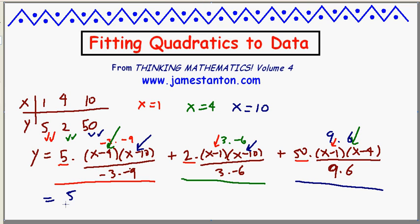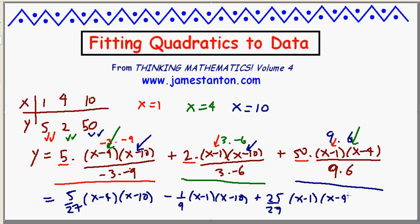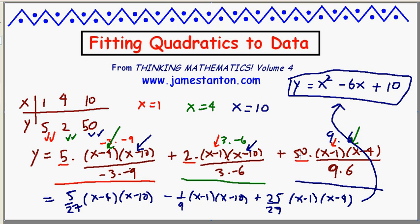At the very least, I really have 5/27 times (x-4)(x-10), and I have -1/9 times (x-1)(x-10), and 25/27 times (x-1)(x-4). I'd like to get you to write this middle term as -3/27. Now it's just a hop, skip and a jump. Basic algebra. If you have the patience, I can see the x squared term is going to be 5/27 minus 3/27 plus 25/27. That's 27/27 of the x squared term. In fact, it's just a single x squared. And a little bit of thought gives -6x, I believe. And I think it's going to be plus 10. I think you can see that quadratic is this simple one in disguise.